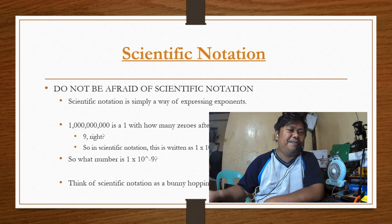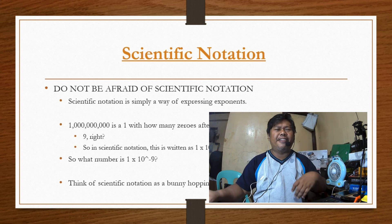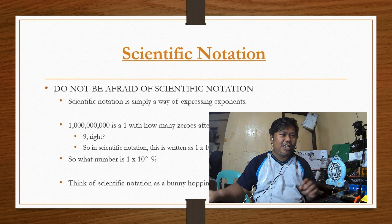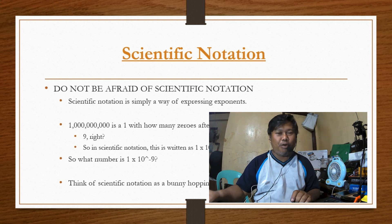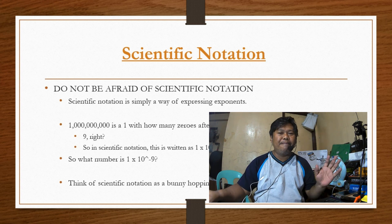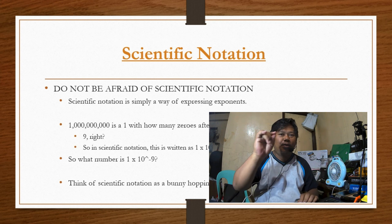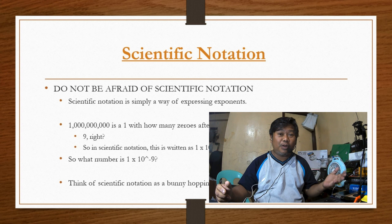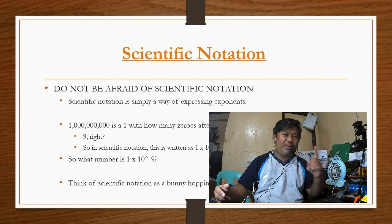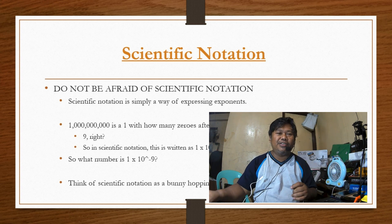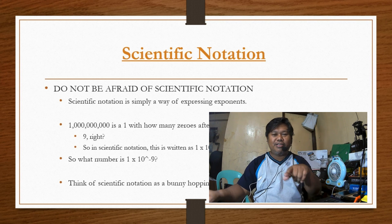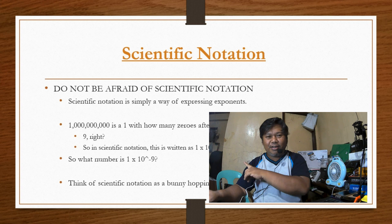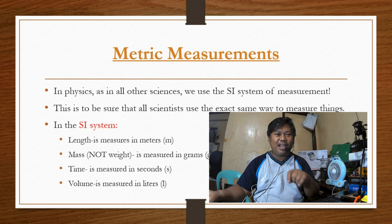Don't be afraid of scientific notation. Scientific notation is simply a way of expressing very large numbers using exponents. For example, one billion — if you write it out, it's a 1 followed by nine zeros. So in scientific notation, instead of writing all those zeros, we write 1 times 10 raised to the 9th power.